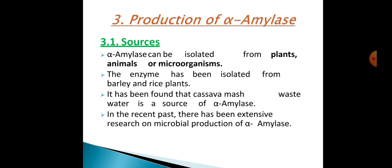Regarding production of alpha-amylase: these enzymes are isolated from plants, animals, or microorganisms. Amylase enzymes are also present in human saliva and have been isolated from barley and rice plants. Cassava mass wastewater is also a source of alpha-amylase. In recent times there has been extensive research on microbial production of alpha-amylase.